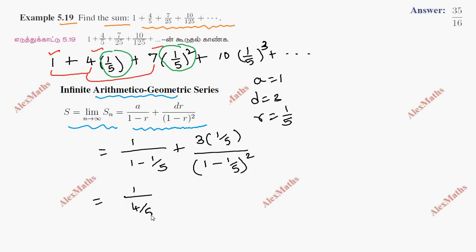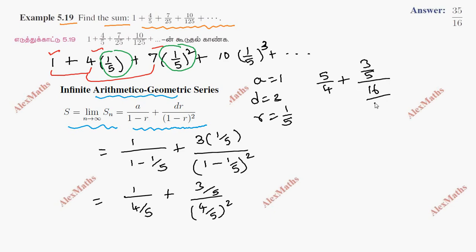Simplifying further: 1 by (4 by 5) plus 3 by 5 divided by (4 by 5) whole square. This gives 5 by 4, and (4 by 5) whole square is 16 by 25. So we have 5 by 4 plus 3 by 5, and we need to take the reciprocal of 16 by 25.